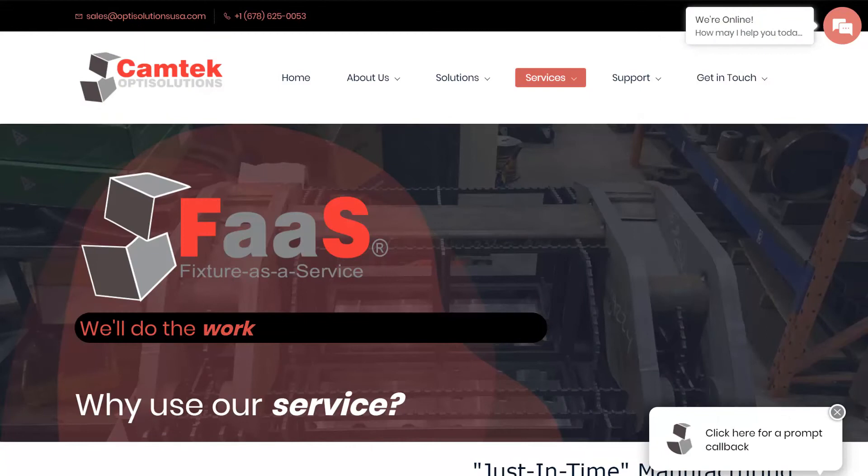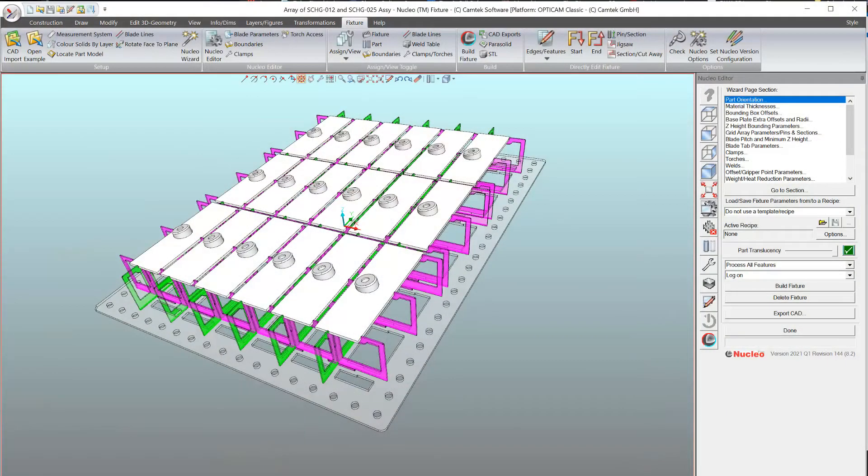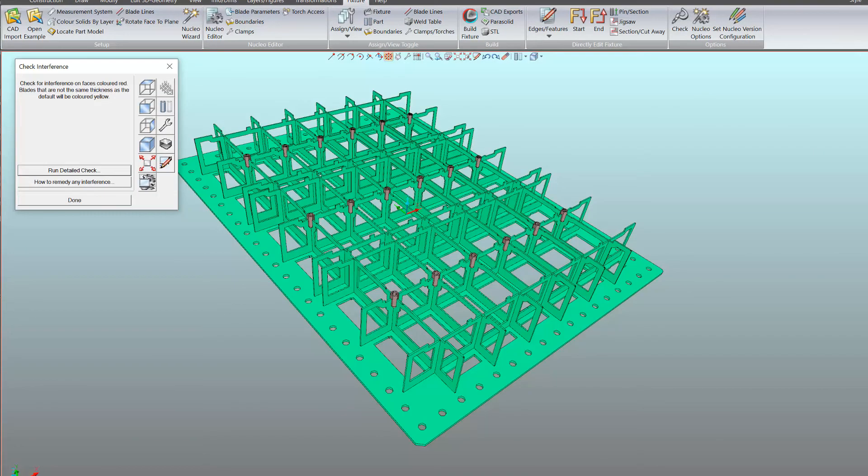Either through email or by uploading on the website, I sent some solid models of the part that I was going to try to jig and then a couple of PDFs of the weld diagram basically. And so we sent that in and it wasn't maybe two days later that I received an example of what the jig would look like. And then I approved that. I said that basically looks right.